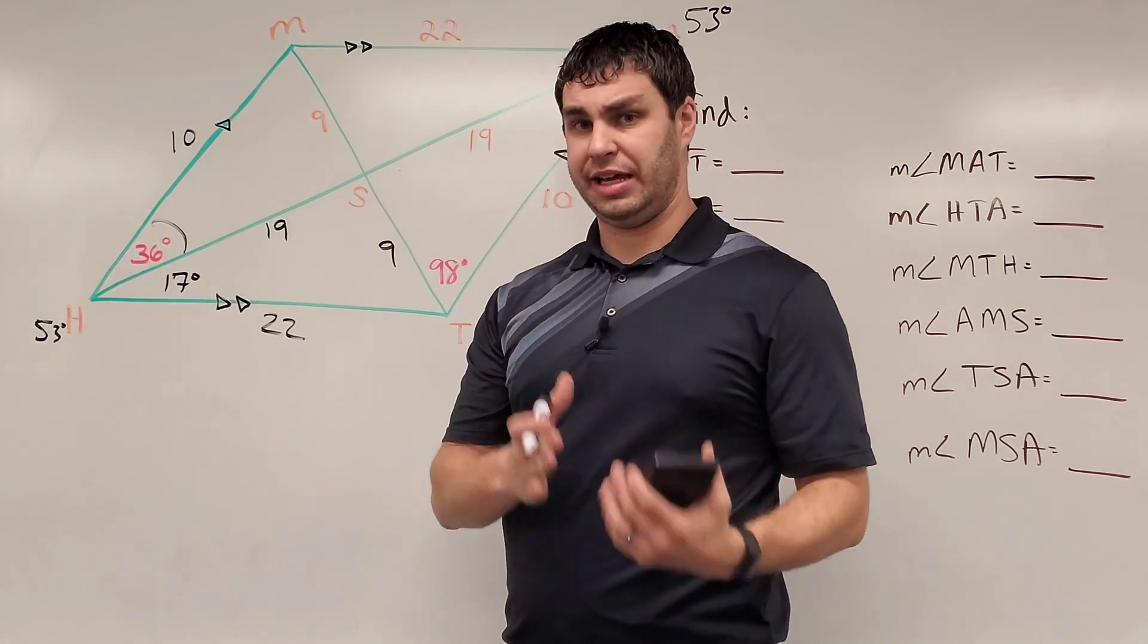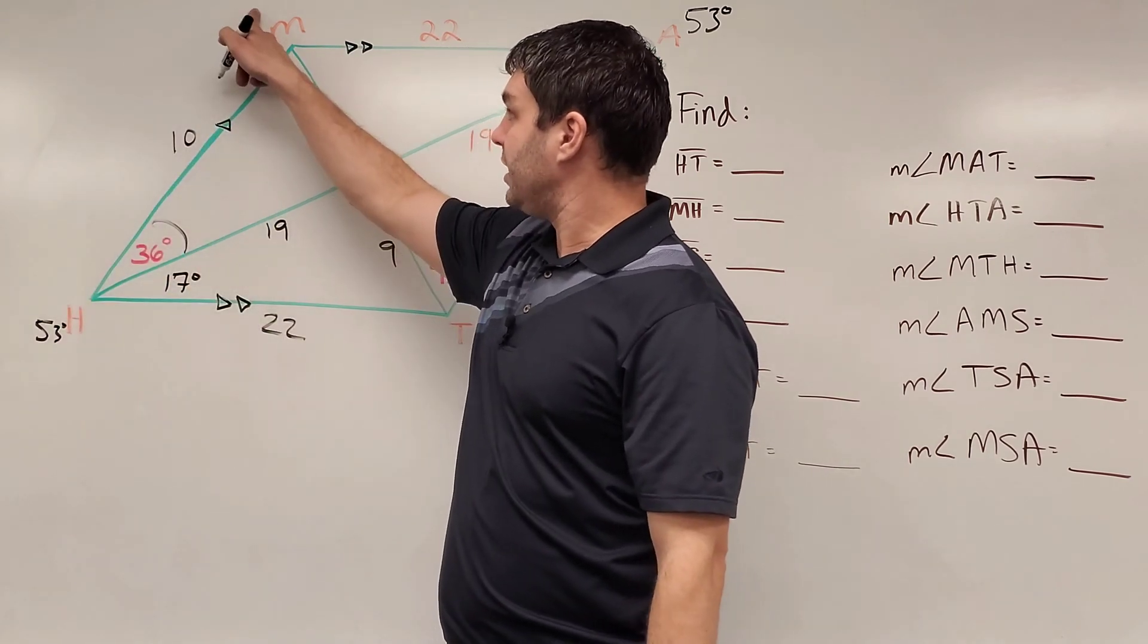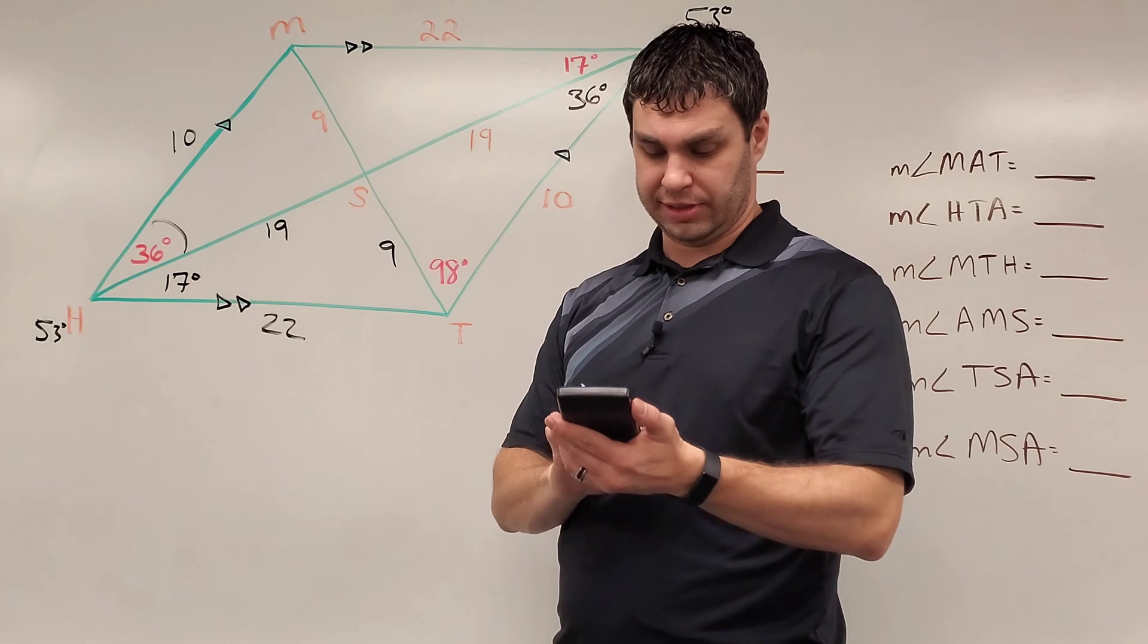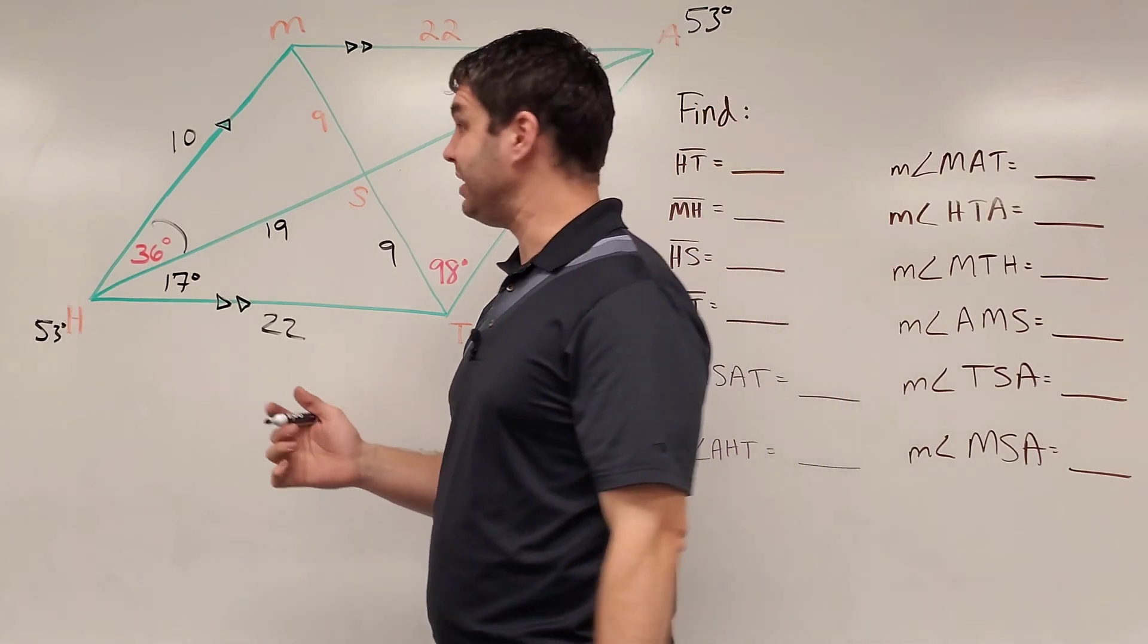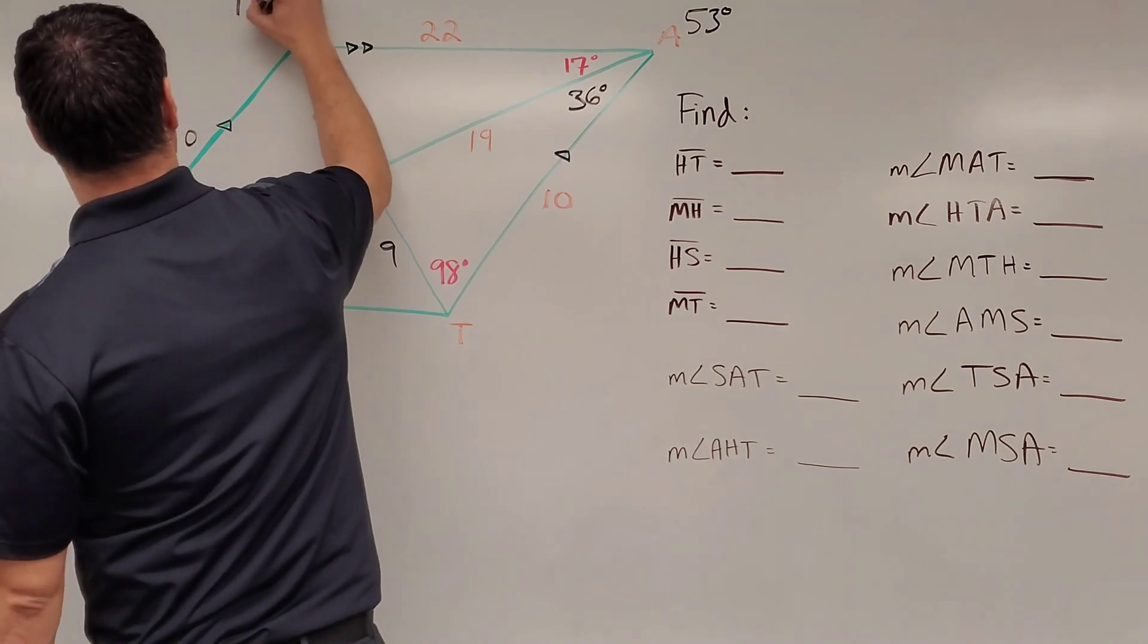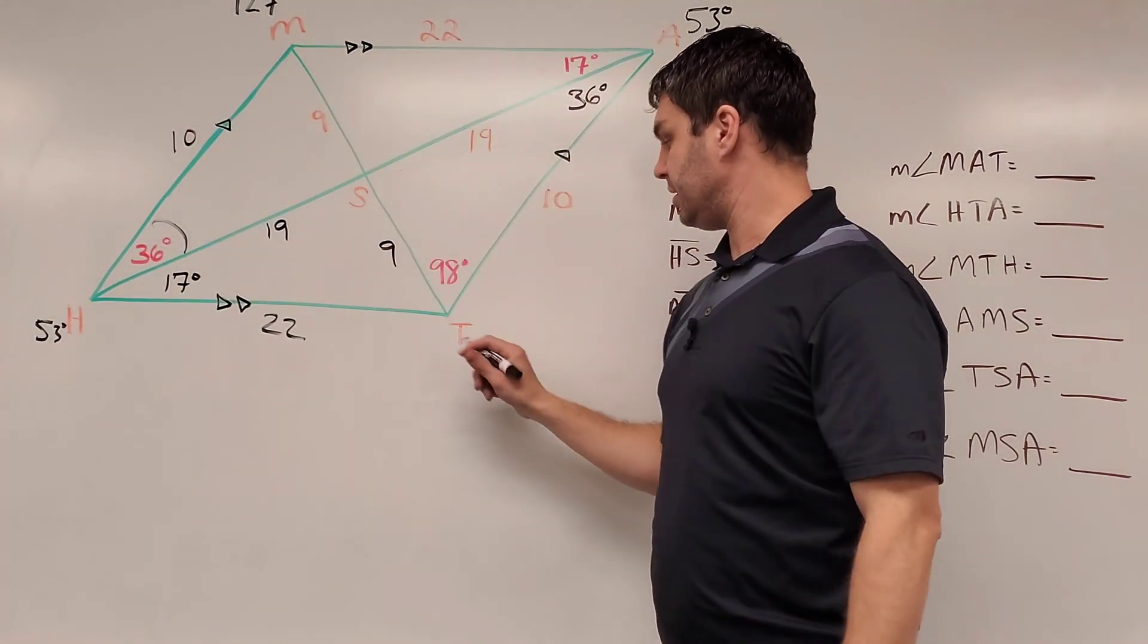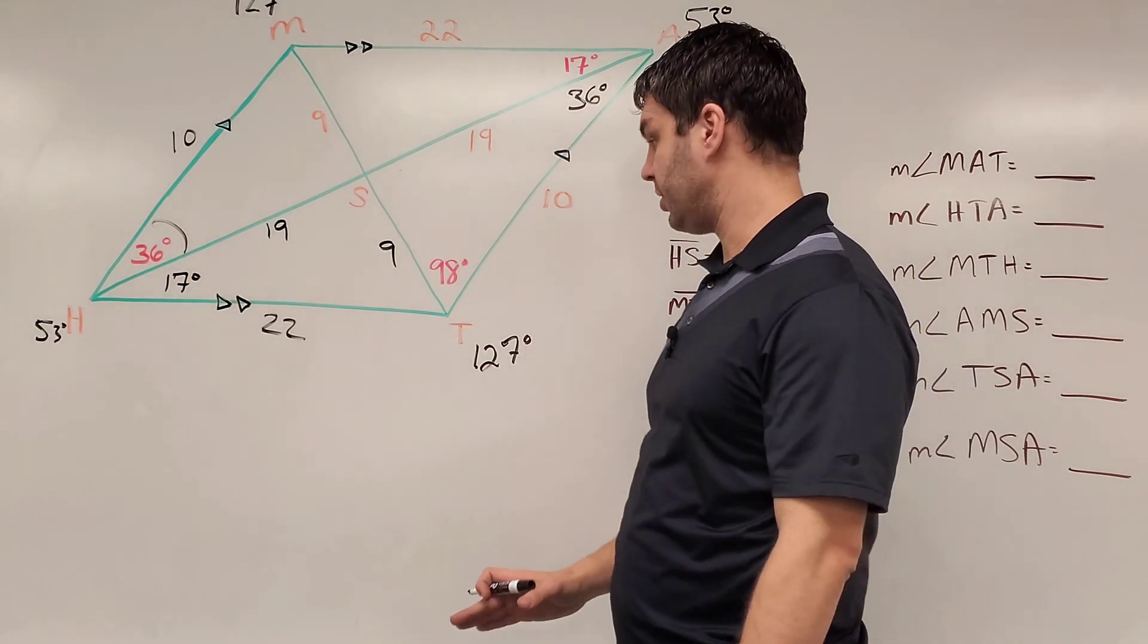We also have the consecutive angles theorem, which says that if this is 53, this has to add up with the 53 to equal 180 degrees. If I take 180 minus 53, that would be 127 for all of angle M, and its opposite is also 127 degrees for all of angle T. Okay?